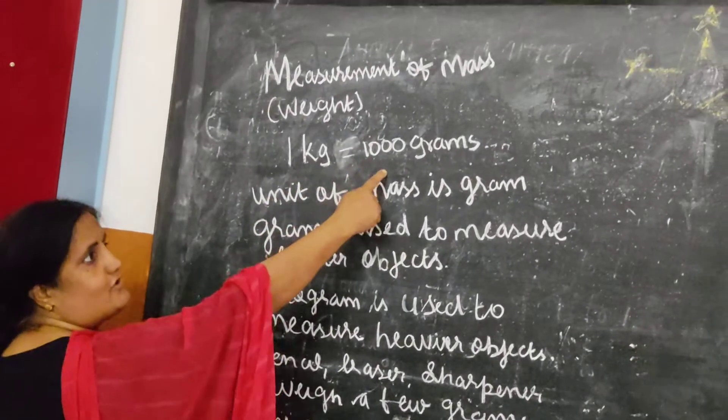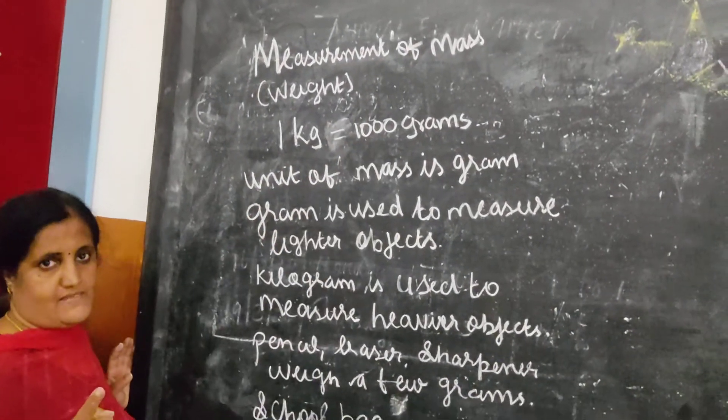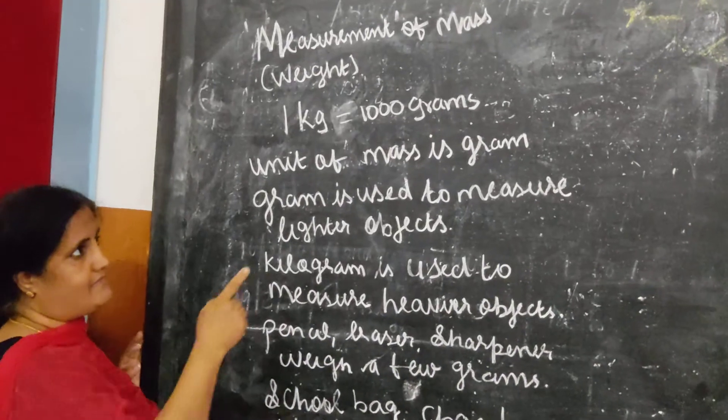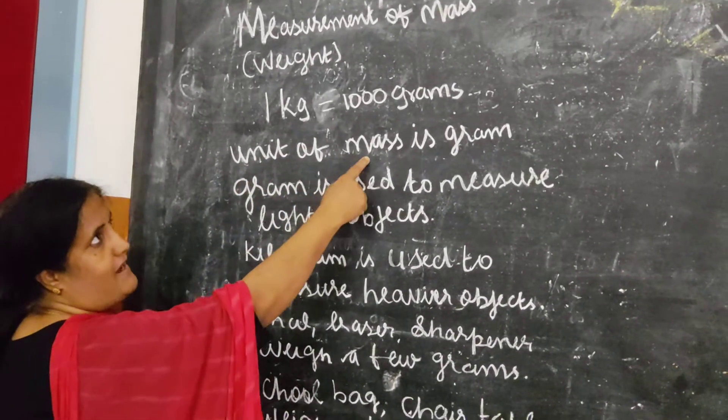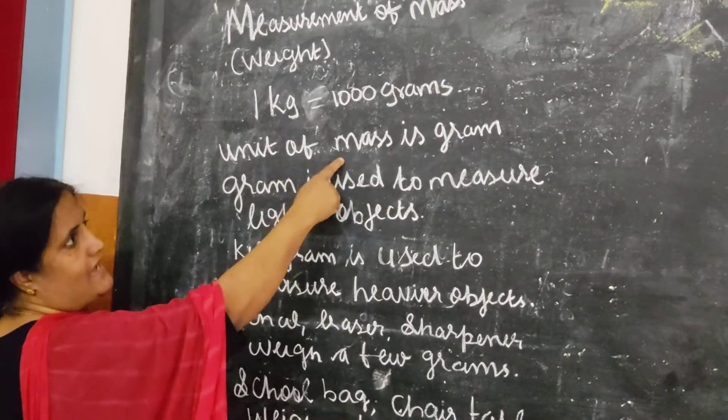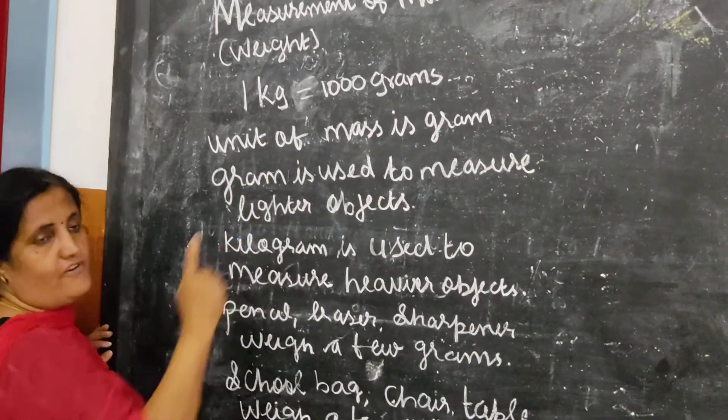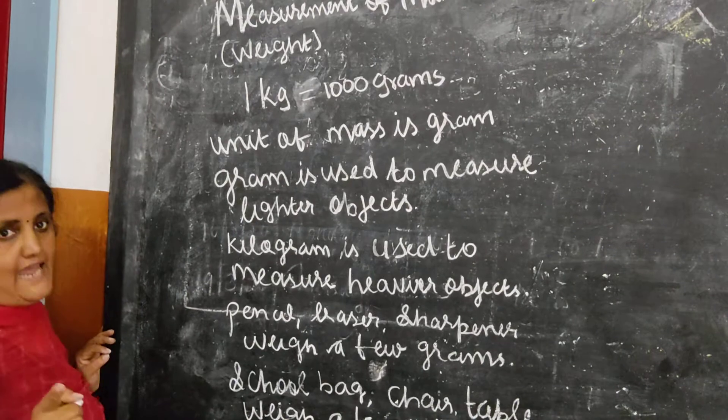One kilogram is equal to thousand grams. The unit of mass — that is, the unit of weight — is gram.